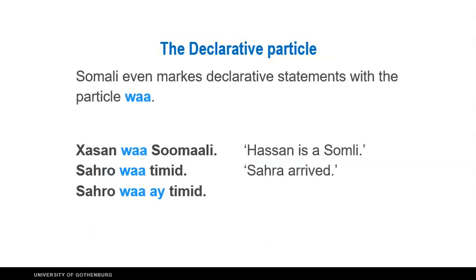This is also what happens in Somali. But what is different in Somali is that also statements — declarative statements, where you tell people some piece of information, some fact, something that you claim — also those declarative statements need to be marked with a particle. And that particle is 'wa'. The job of this particle is to tell the listener or reader that the sentence is a declarative statement. So if we want to say 'Hassan is a Somali', we need to have this declarative particle.